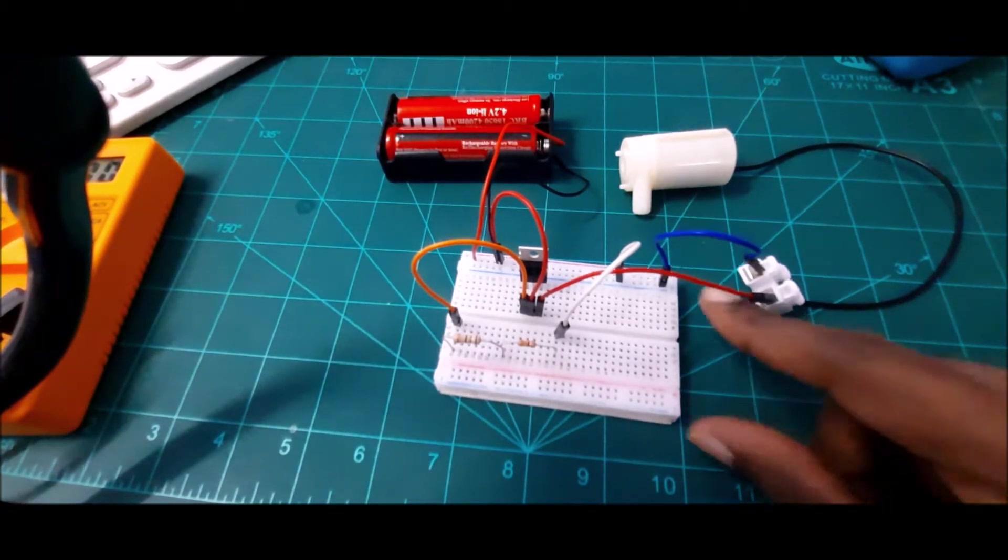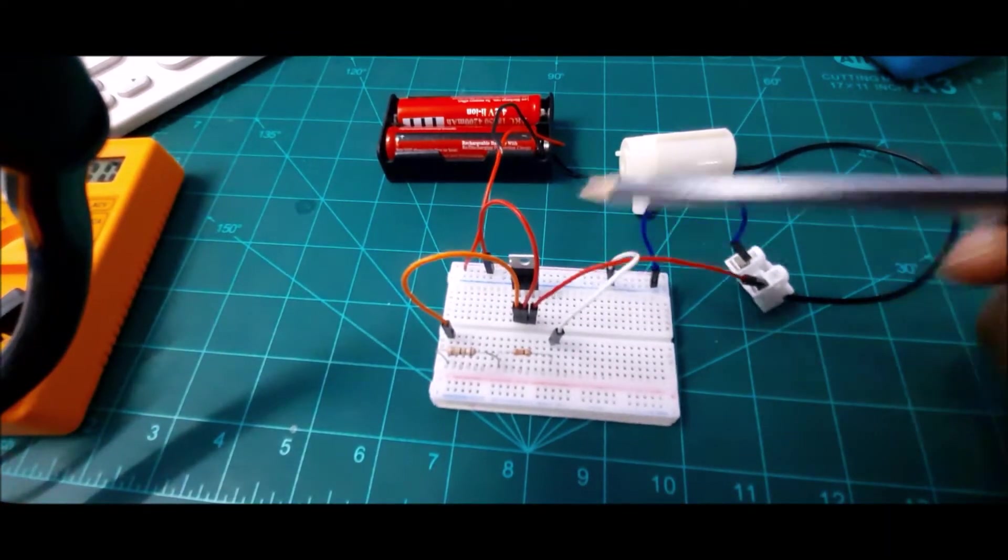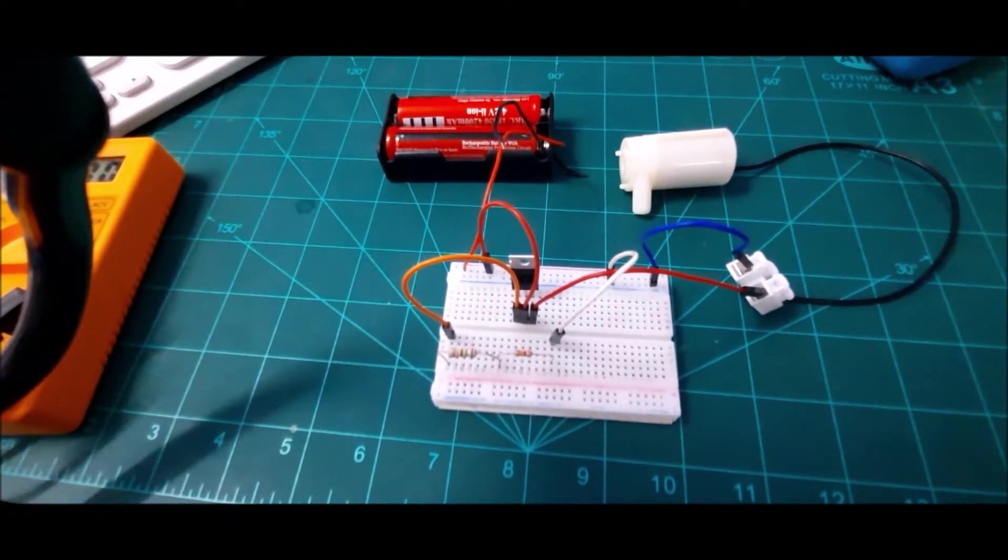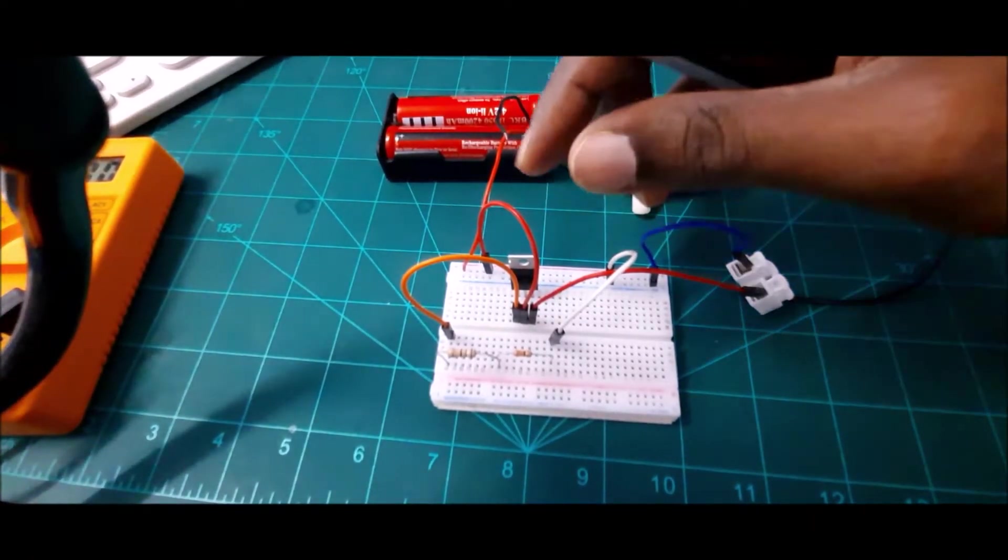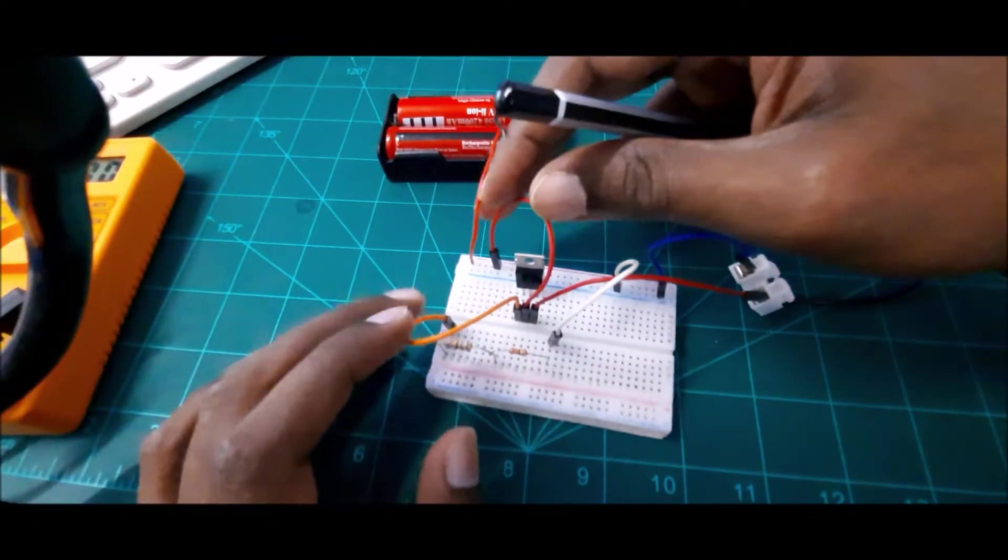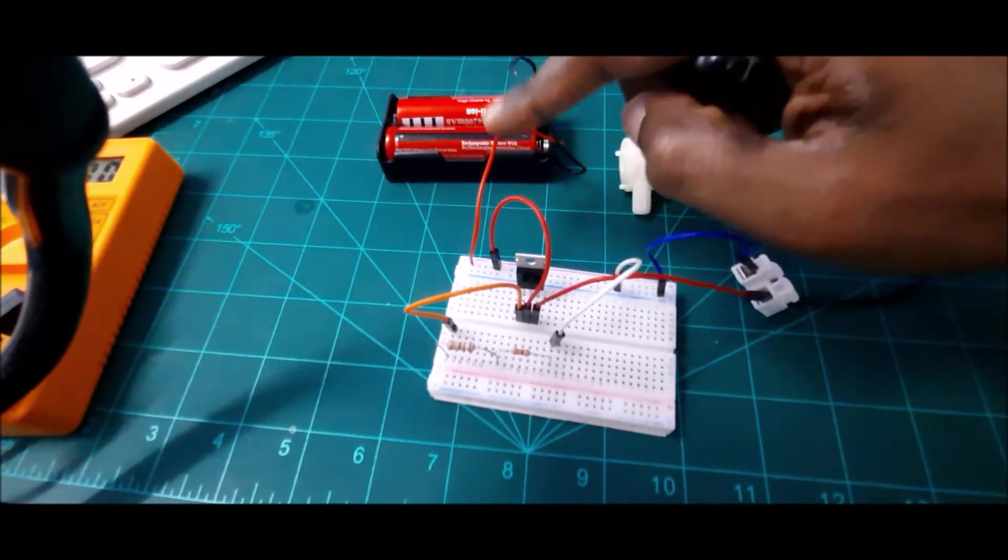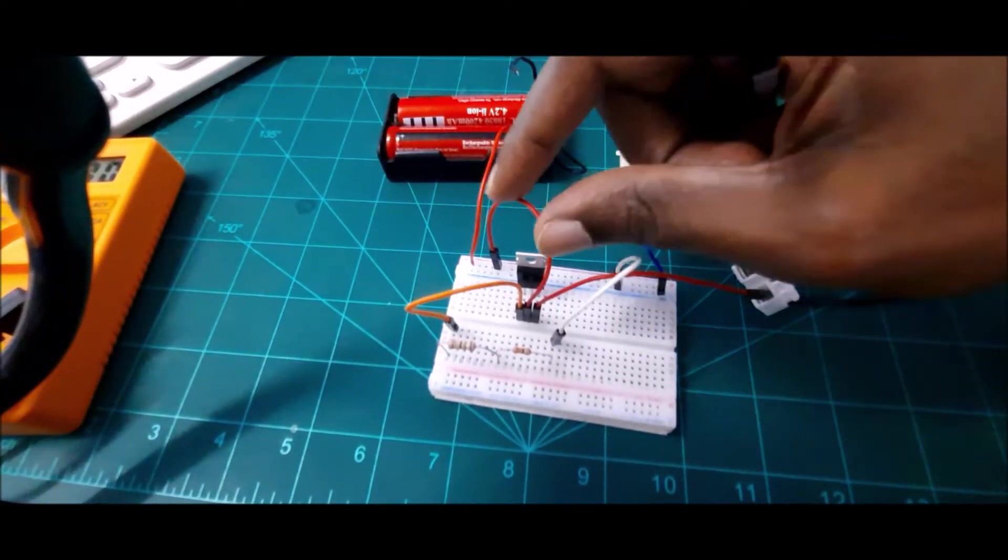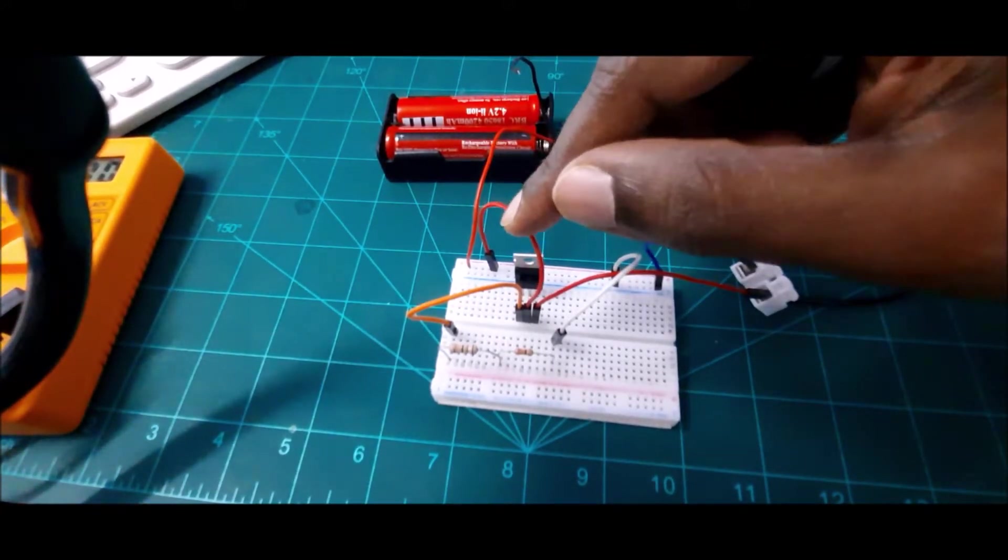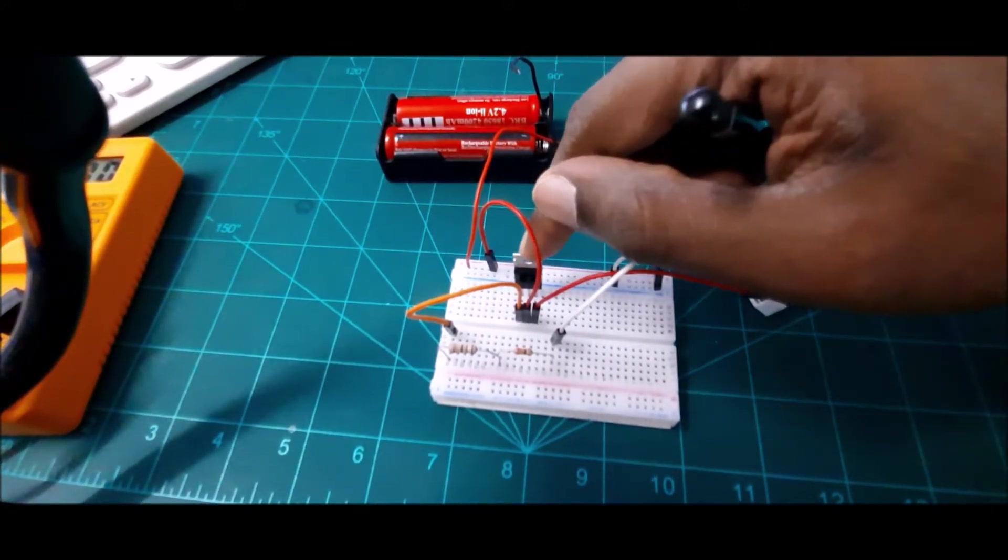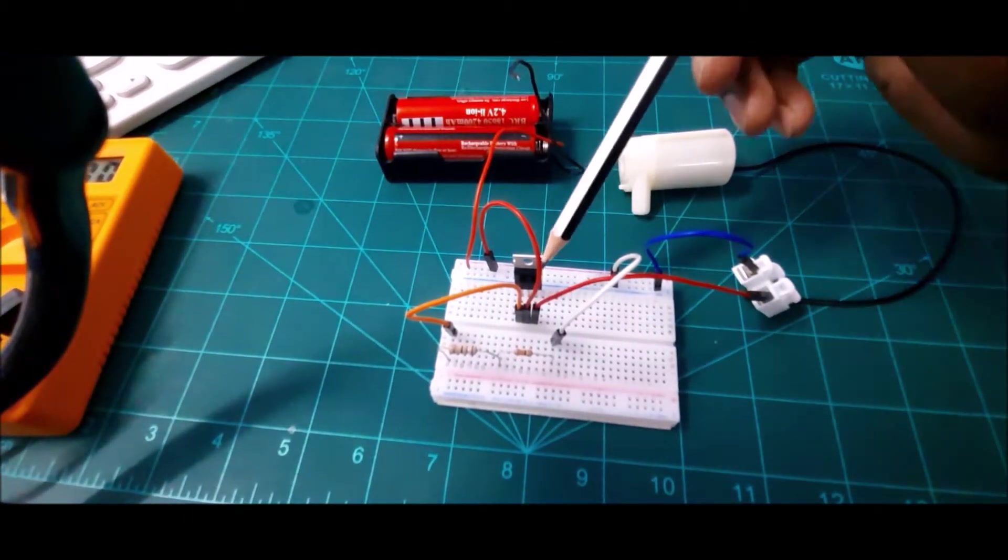For this example, I'm using a TIP32C PNP transistor. Let me briefly show you how this circuit is connected. First of all, let's start with the power supply. The power supply is connected to the collector pin of the transistor.